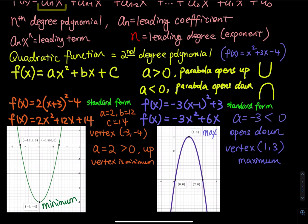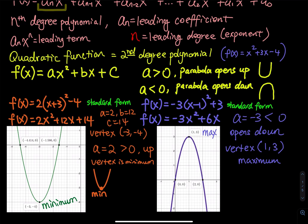The leading coefficient a equals 2, which is positive, so the parabola opens up. When the parabola opens up, the vertex is the minimum — the lowest point of the parabola. I don't expect you to find the vertex using algebra in this video; we'll cover that next time. Just graph it, point at the vertex with the cursor, and it tells you the coordinate: negative 3 comma negative 4. That's the minimum.